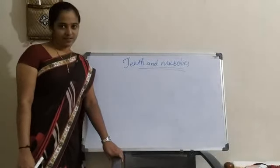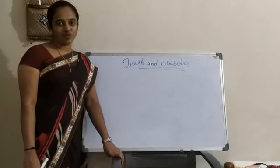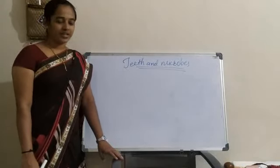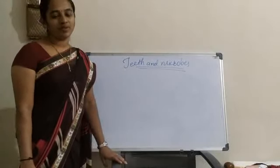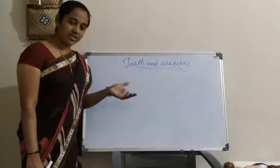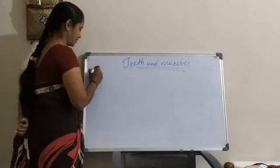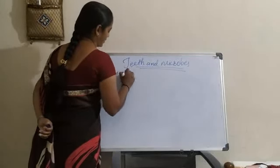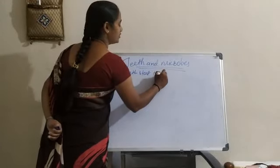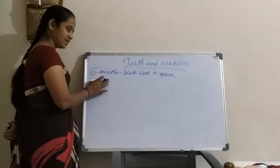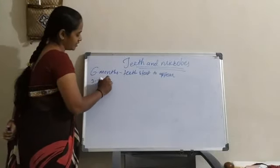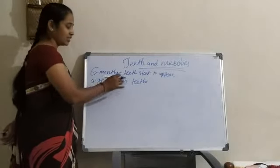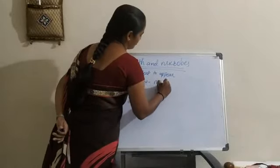Do you know that a newborn baby does not have teeth, and because it does not have teeth, it cannot eat solid food. So it drinks only mother's milk or liquid foods. The newborn baby's teeth are hidden below the gums and start to appear at the age of 6 months. By the time the baby grows up to 3 years, the baby has 20 teeth.